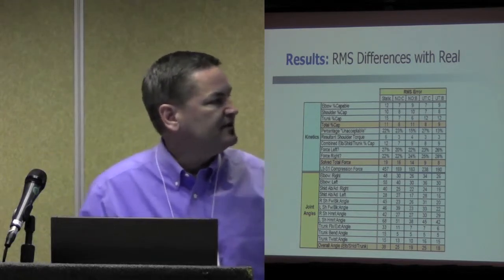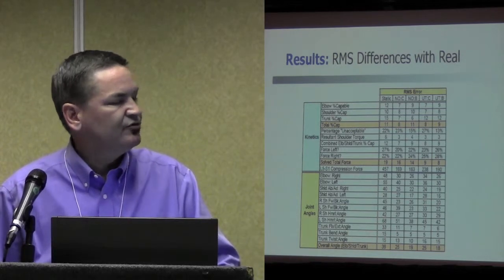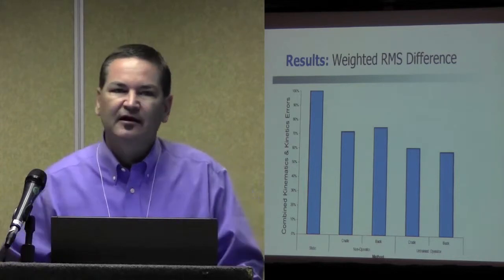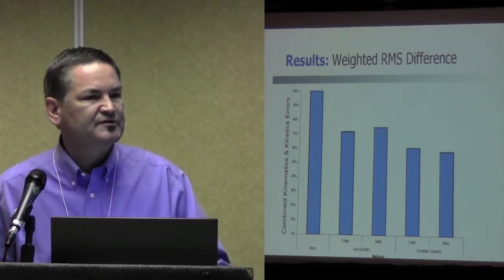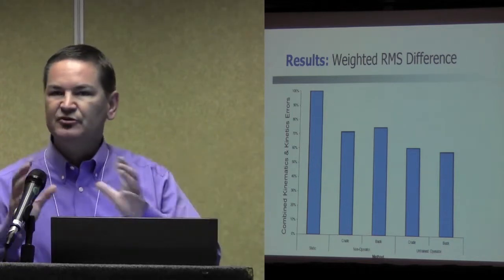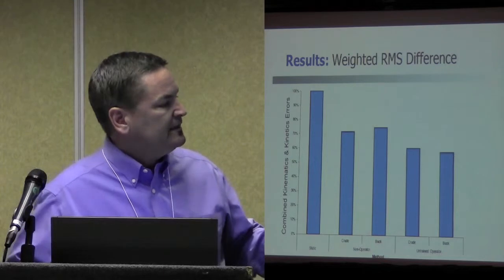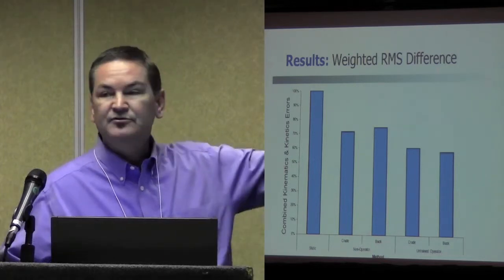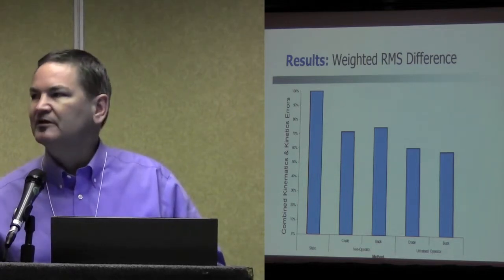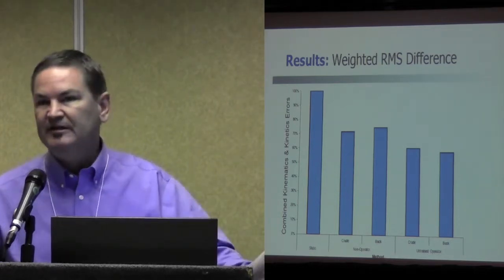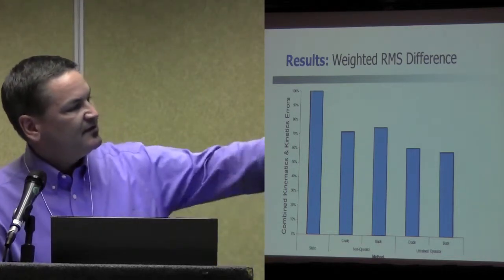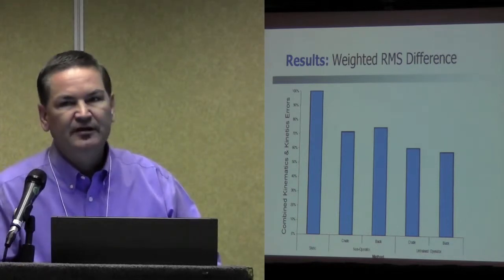So I did a few scores basically taking some of the most important results in terms of RMS errors, both for the kinetics and the joint angles. If I take some of the most important measures and get an average error, it kind of looks like what you'd expect. Sitting at a computer workstation trying to guess resulted in the highest errors when you pool some of the kinematic and kinetic variables. When you have the non-operators, you have the next level of errors, but not a big difference between the crude and the buck. So it seems like you don't need a lot of physical props in there, unless somebody needs to actually physically lean or there needs to be a step because you can't do that virtually. And then a little bit of an improvement when you went to the untrained operators.